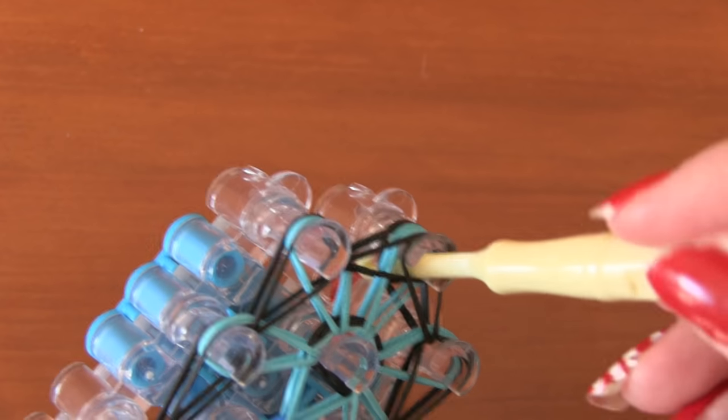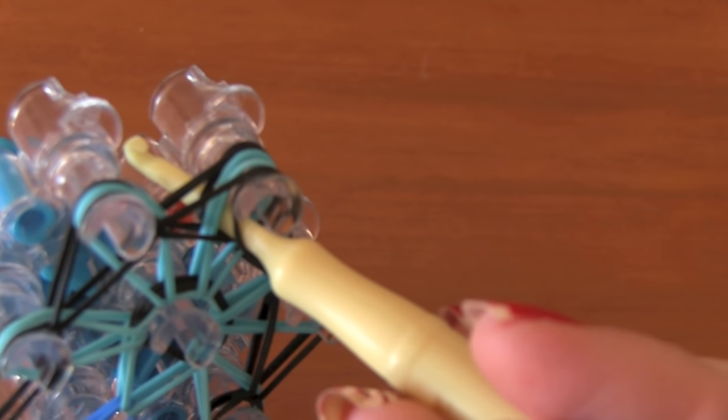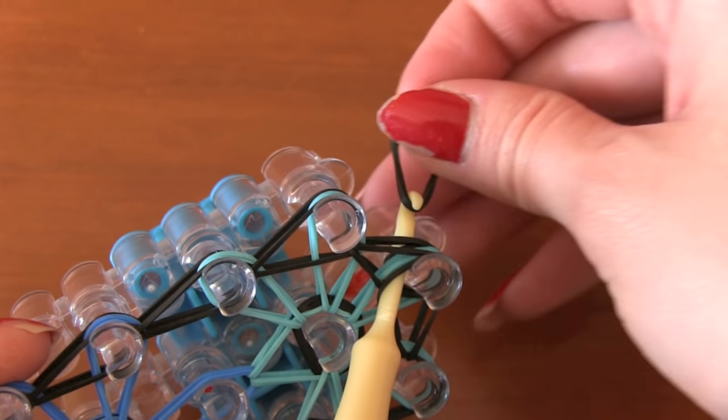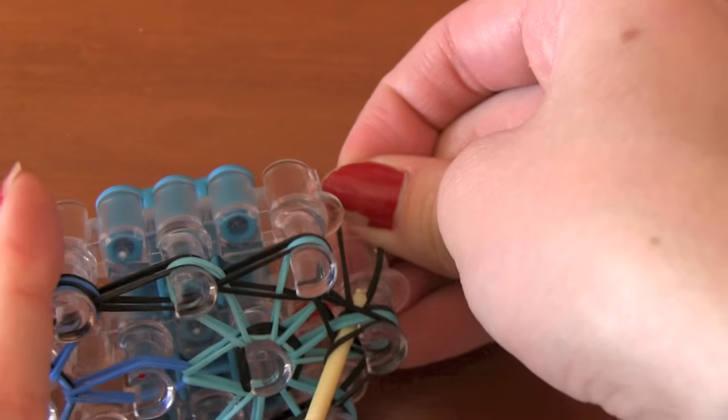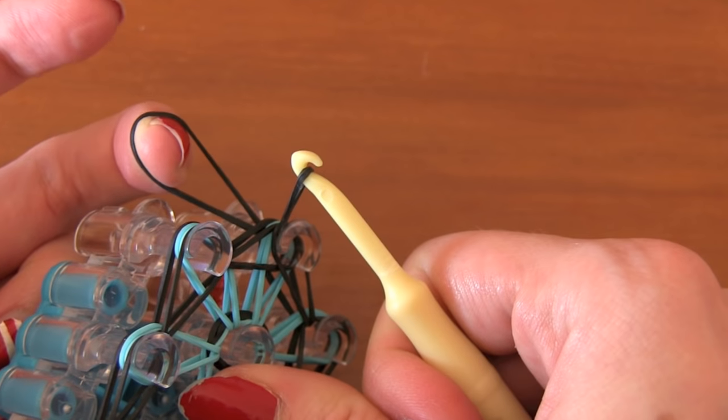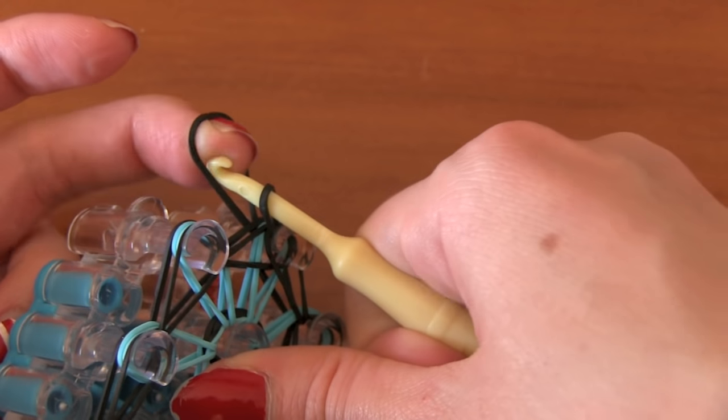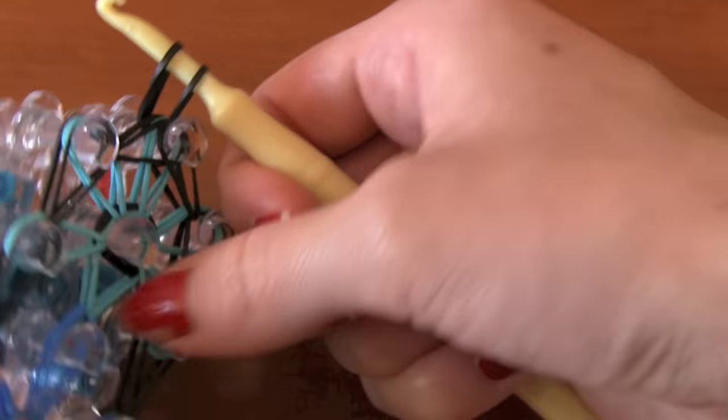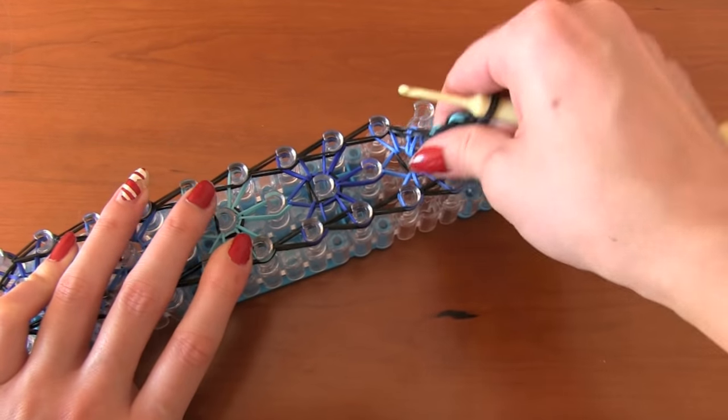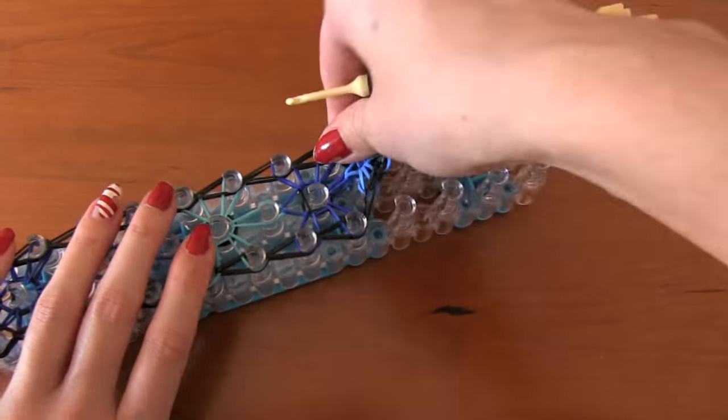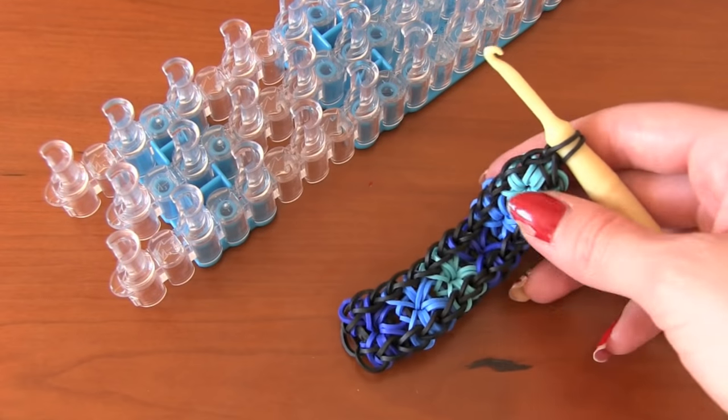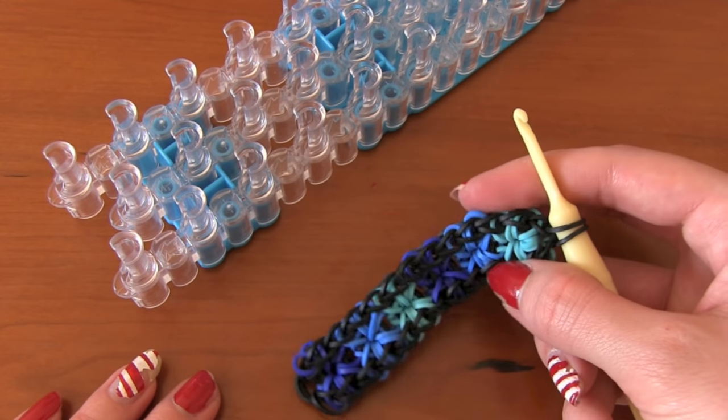Once you're done, you're going to put your hook into all the bands on that last middle peg. And then you're going to grab a black band and you're going to want to pull it through all those bands. And then place your hook through the other side of that black band so it is folded in half onto the hook. And then make sure that band is secure on the hook and now you can rip your bands off gently and easily so your bracelet doesn't snap. And then you should have a starburst bracelet.